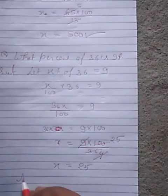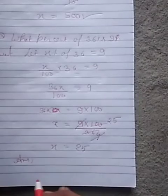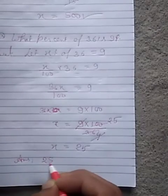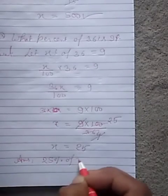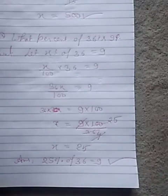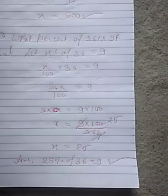So X is equal to student 25. Clear? So you will write the answer students. 25% of 36 is equal to 9. This is our answer. Thank you students for watching this video carefully. Thank you.